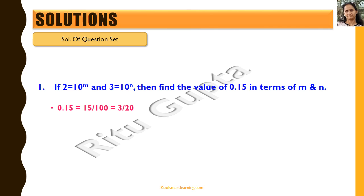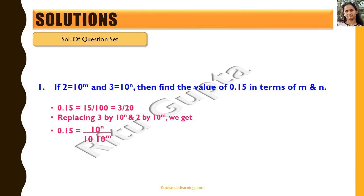And 20 can be written as 2 into 10. Now we replace the values of 3 and 2 by 10 raised to power n and 10 raised to power m respectively. So we get 0.15 is equal to 10 raised to power n divided by 10 into 10 raised to power m, which gives us 0.15 equals 10 raised to power n minus m minus 1.